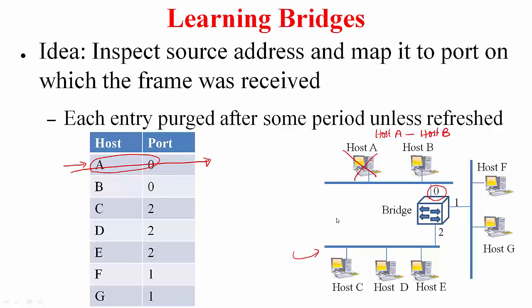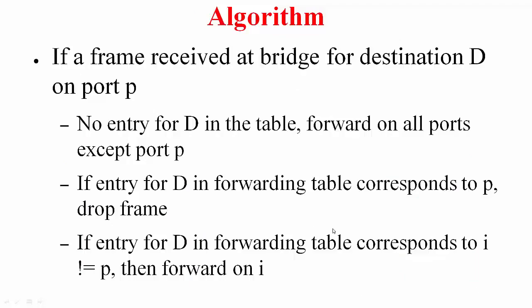Now, this thought must have occurred to you. Suppose host B never sent a frame so far. You have never seen a frame from B, thereby you do not have an entry in the forwarding table, but host A has sent a particular frame for host B. What do you do in this case? Well, what can you do? You do not know the information. So you are going to forward it on all of your other interfaces. Here is the algorithm. If a frame is received at a bridge for destination D on port P, this is what you do. If there is no entry for D in your forwarding table, you forward it on all ports except the port on which it was received, which is port P.